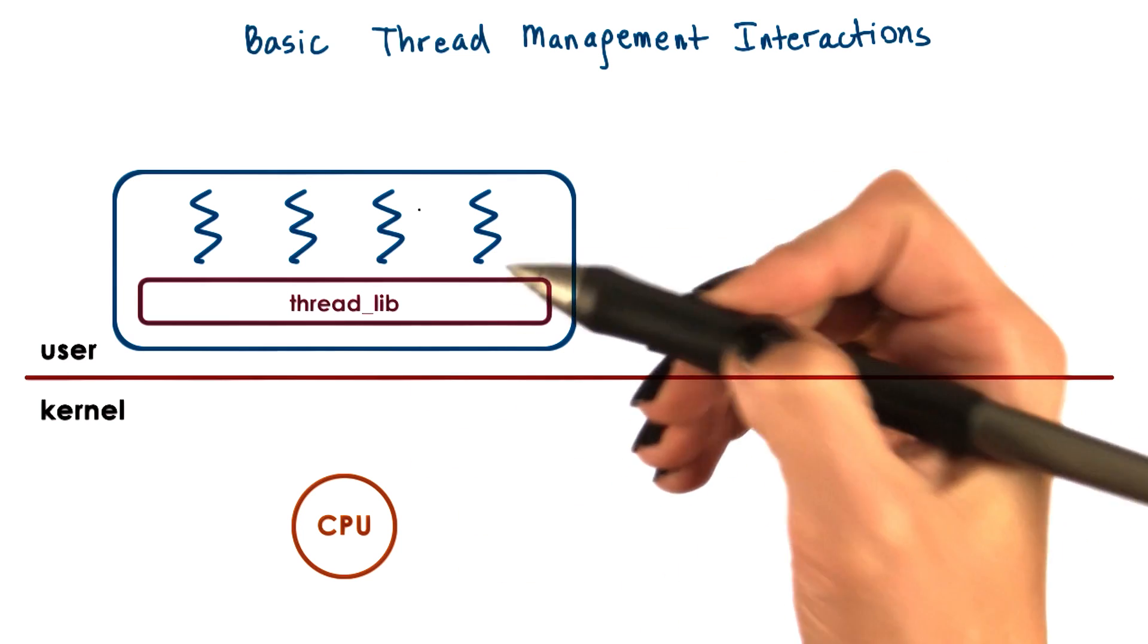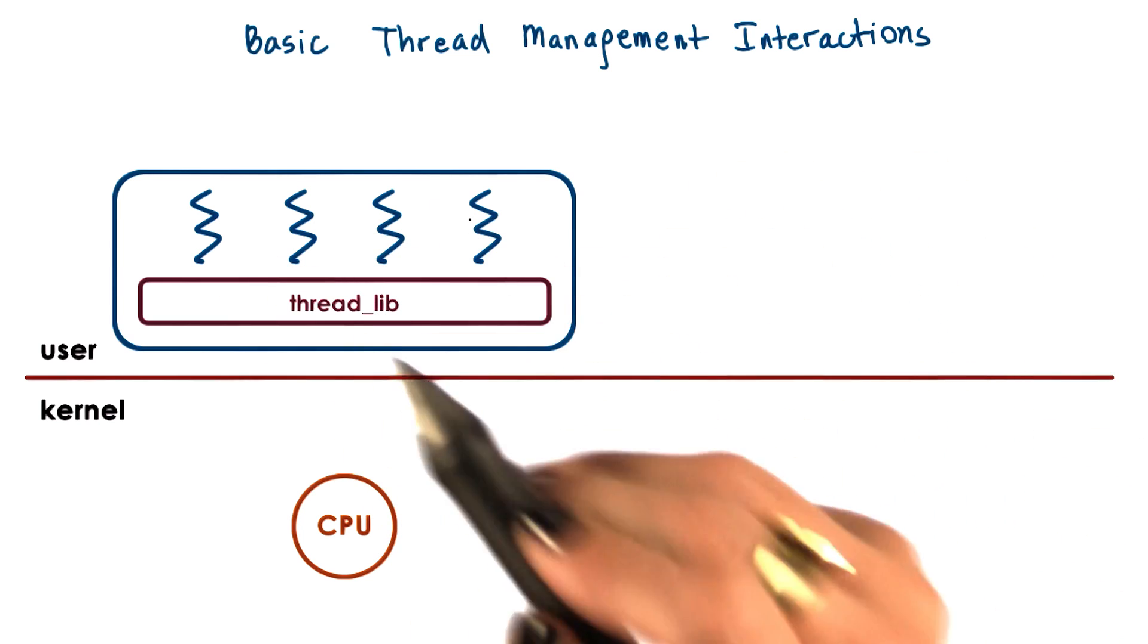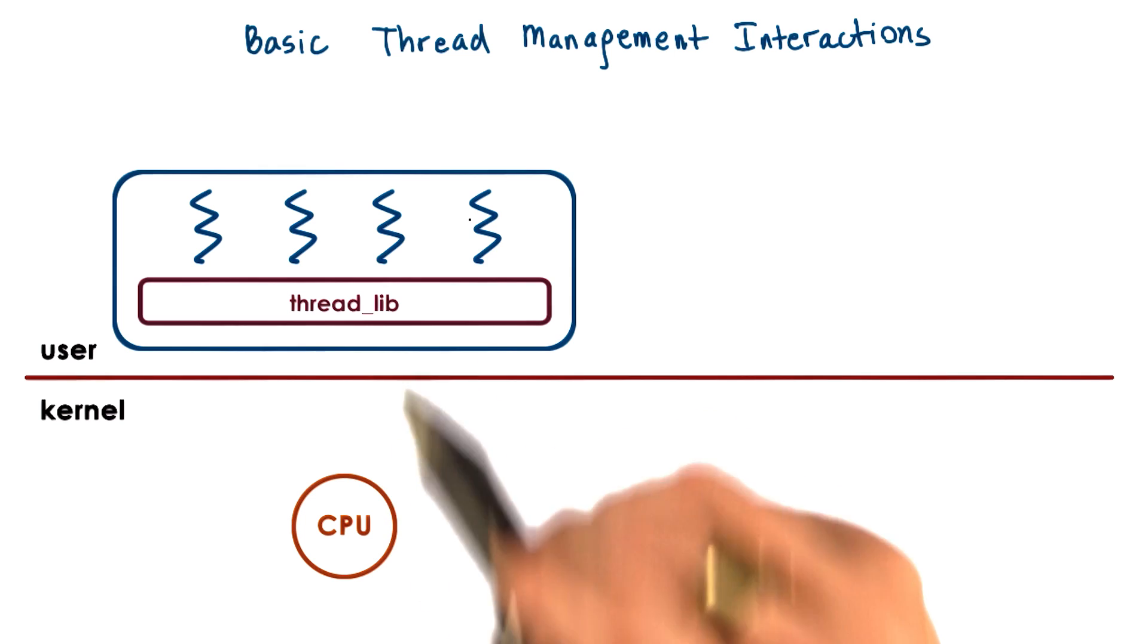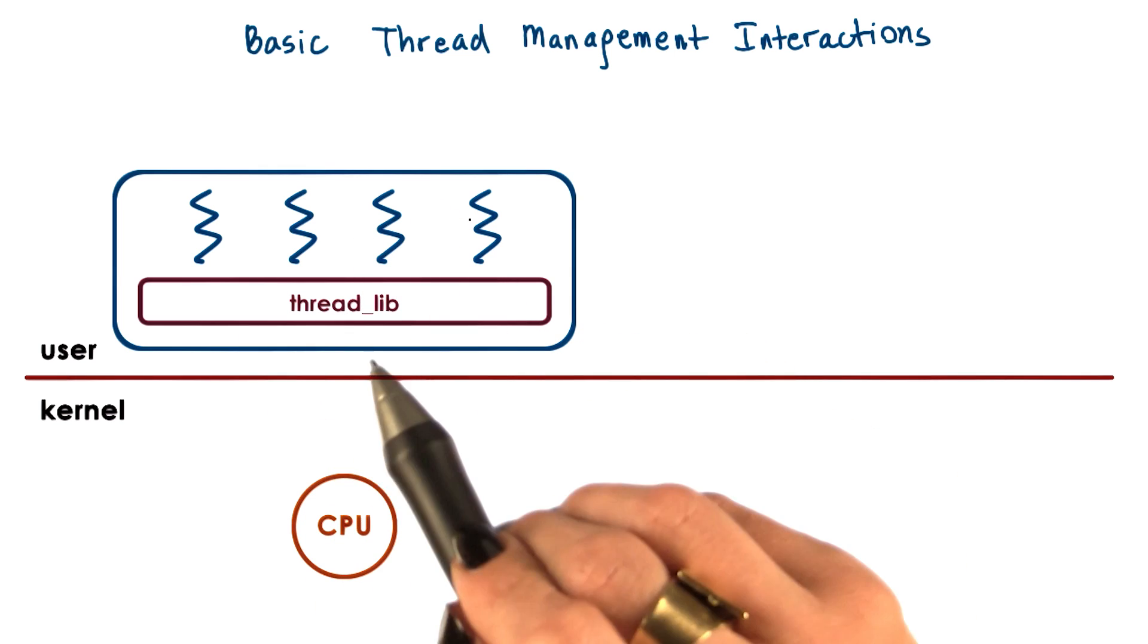Basically, if you look at the process, two of its user-level threads are always waiting on I/O while the other two are executing.